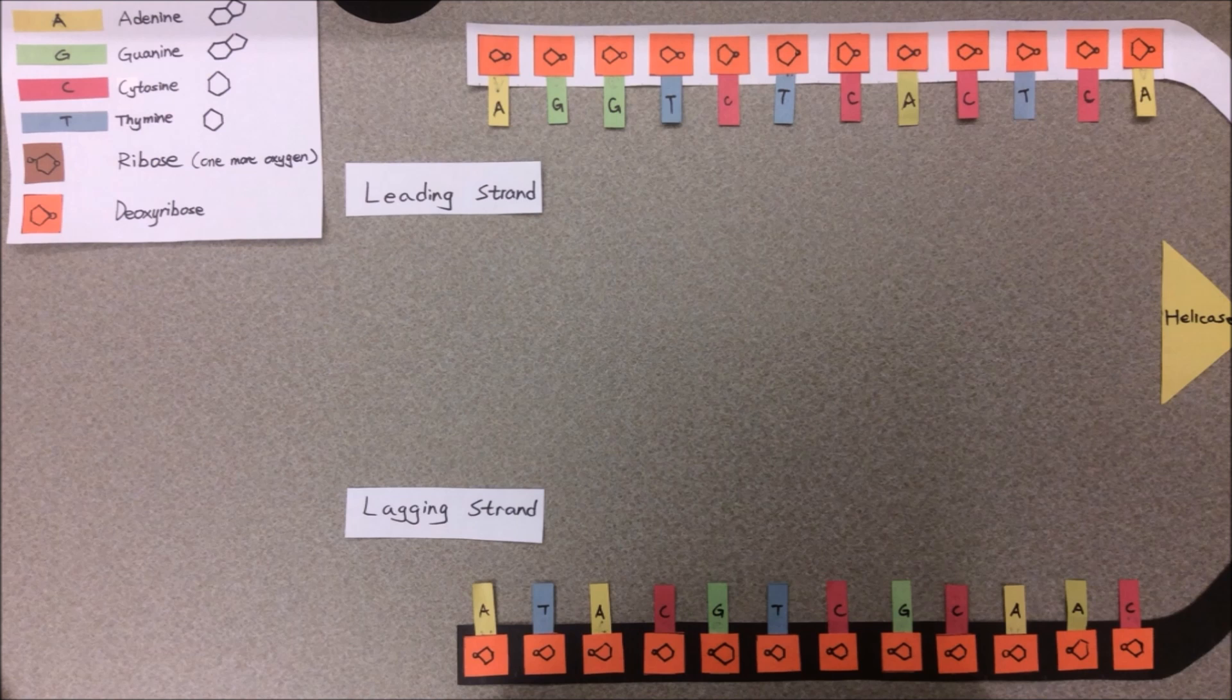This characteristic of DNA polymerase means that the daughter strands synthesize through different methods: one adding nucleotides one by one in the direction of the replication fork, the other able to add nucleotides only in chunks.